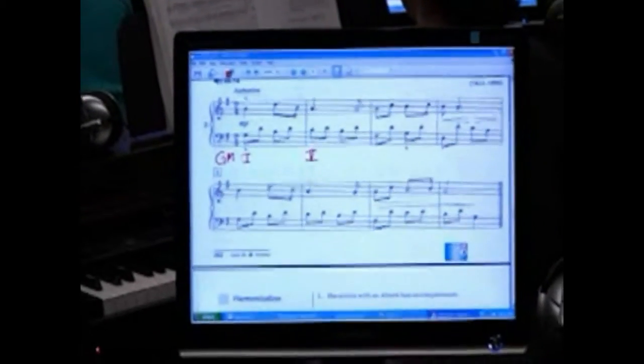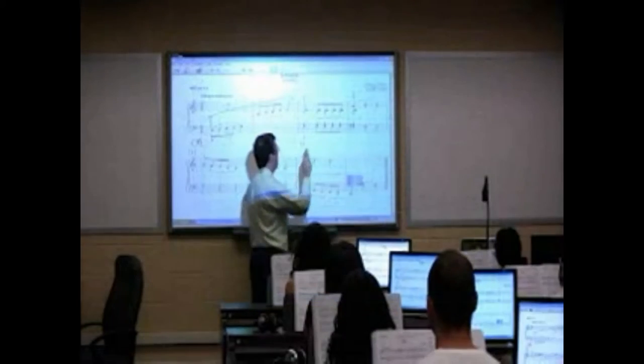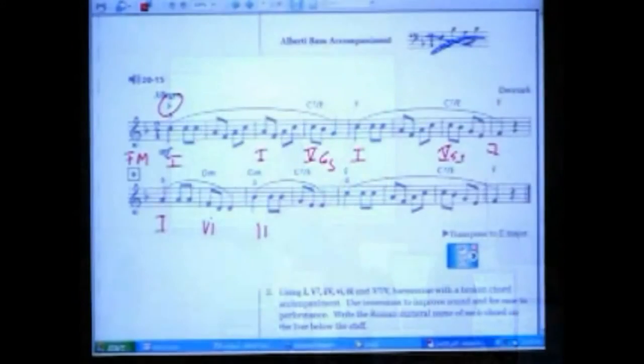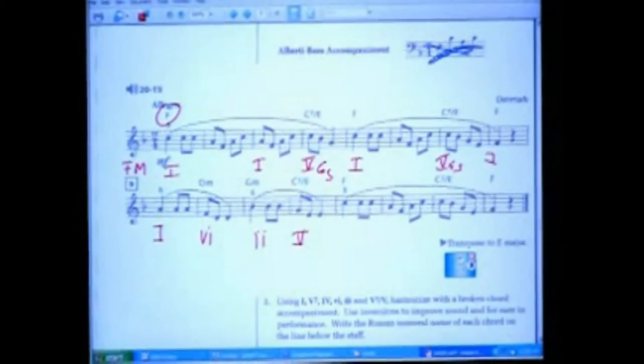Each student's keyboard has a computer monitor on top, so they can easily see what is projected on the smart board. One of the advantages of using a smart board is that the instructor can use a special pen to write on the board and have it show up on the projected image.